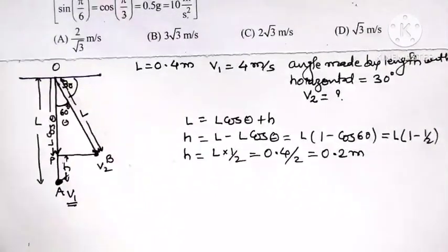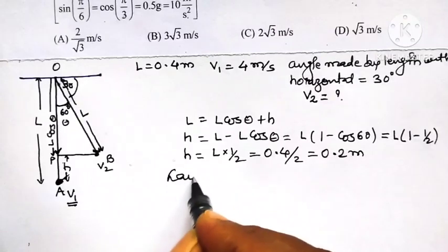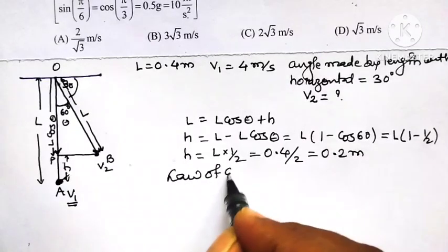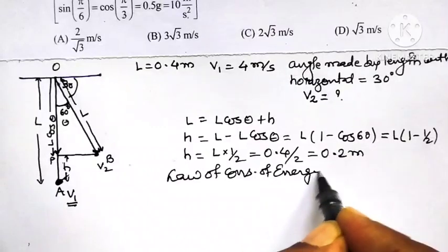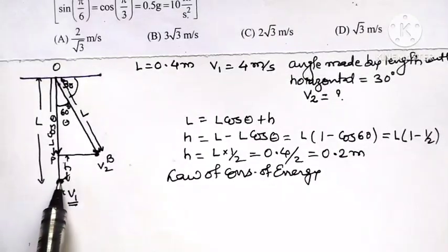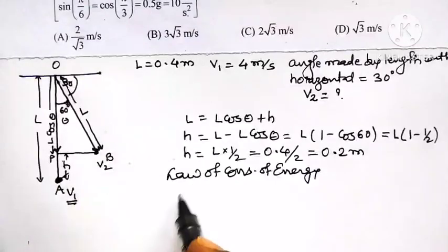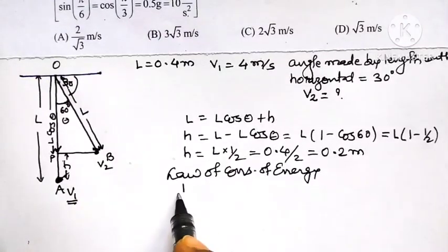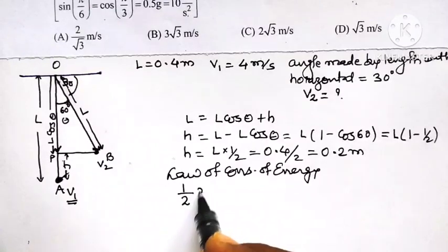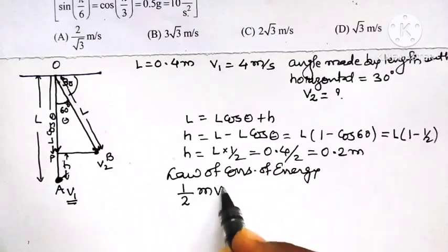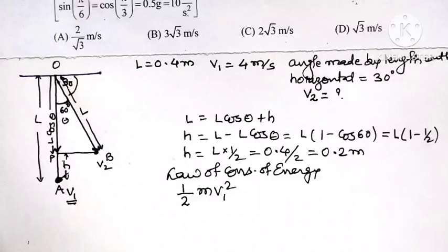Now according to law of conservation of energy, energy at mean position: pendulum has only kinetic energy. As far as mean position A is concerned, the kinetic energy possessed by pendulum is half m V1 square, where V1 is the maximum speed and is given as 4 meters per second.